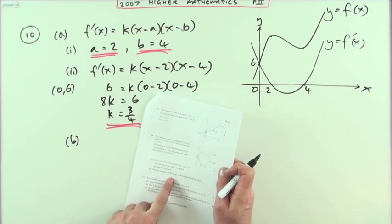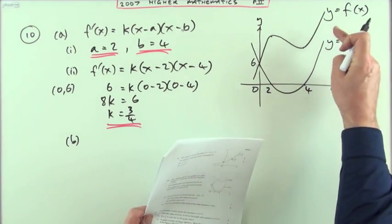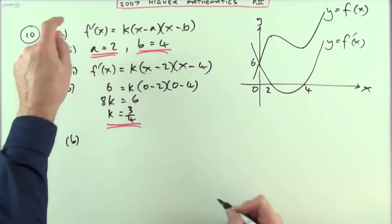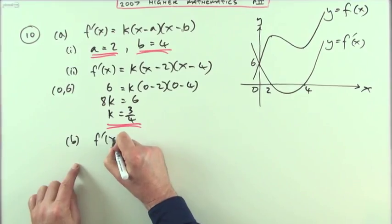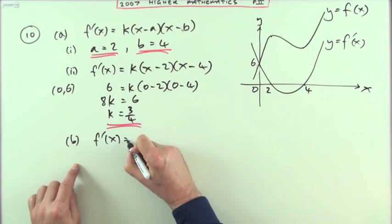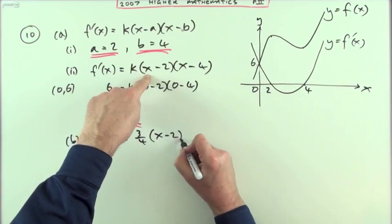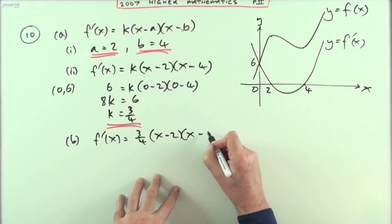And part b then. Find the equation of the cubic function, the function f(x), whose derivative is f'(x). Whose derivative is this. Whose derivative is k was three quarters, x minus two, x minus four.